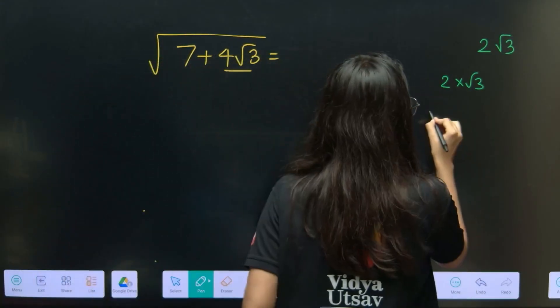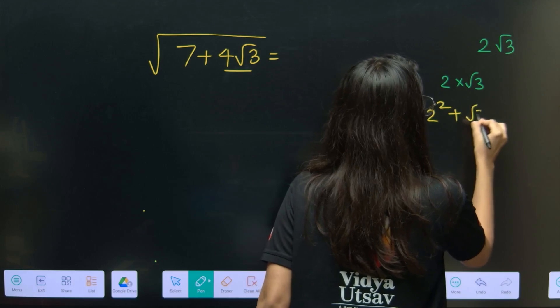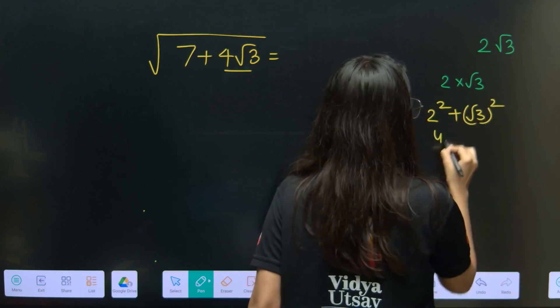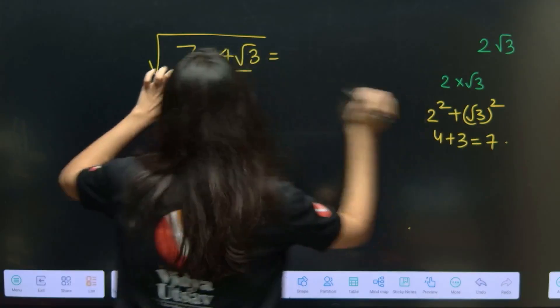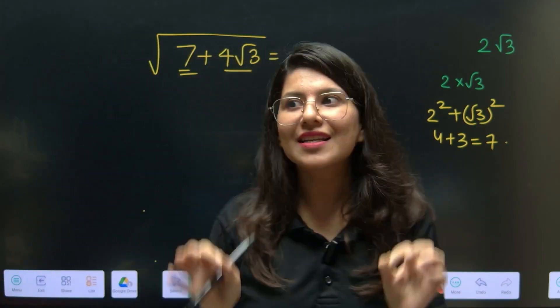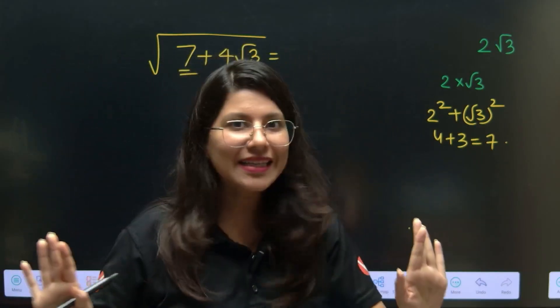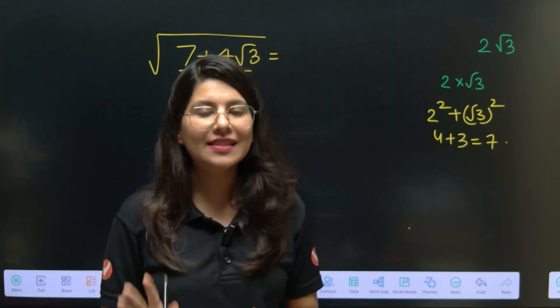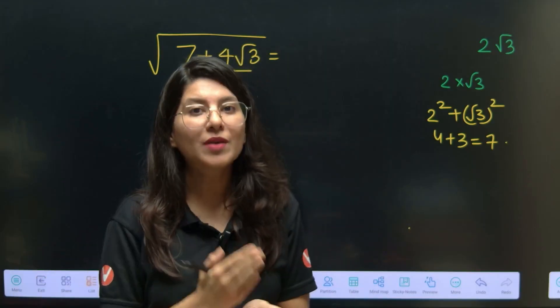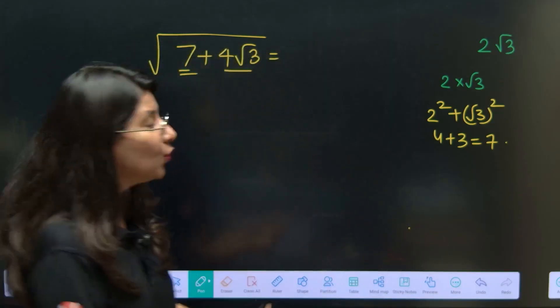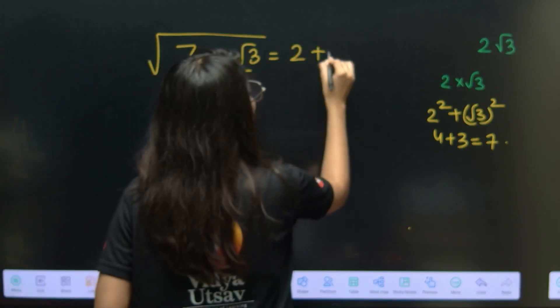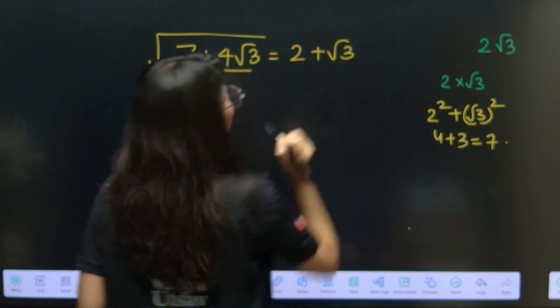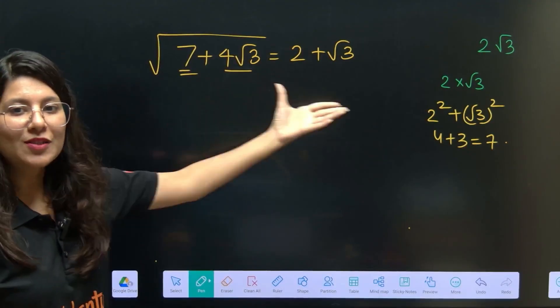So 4 plus 3 which equals 7, and you know what? This 7 is matching with this 7. That means you are splitting it right. No more splitting is required, no more hit and trial is required. You have got the perfect match. 2 and root 3 are the 2 perfect numbers. So this is 2 plus root 3. That's it.